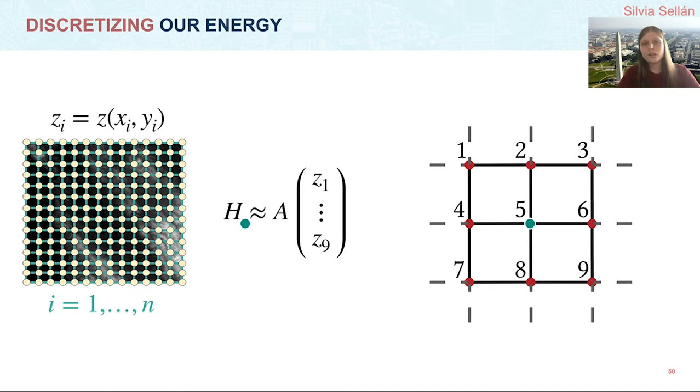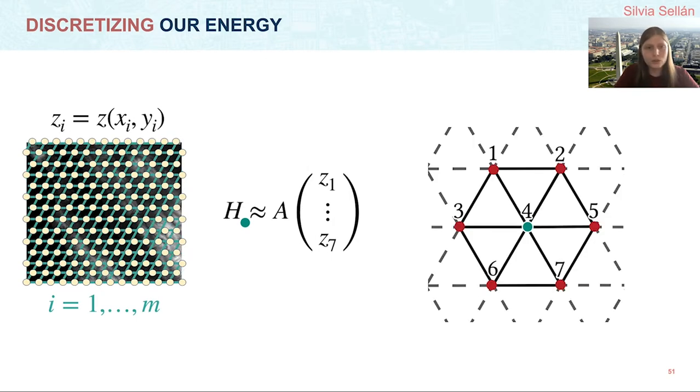Something we observe is that this approach introduces a high degree of bias in our computed Hessians. With this square grid, we are much more likely to get Hessians whose eigen spaces are aligned with the xy axis than with any other direction. This is unacceptable for us. We want a method that avoids any directional bias, and it is because of that that we switch to this hexagonal centered grid, where again we can approximate the Hessians as linear functions of the heights, but now in a way that is surprisingly bias-free.